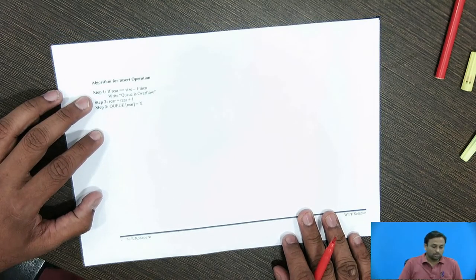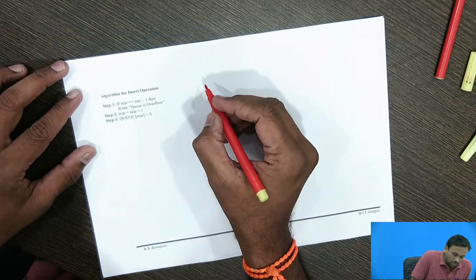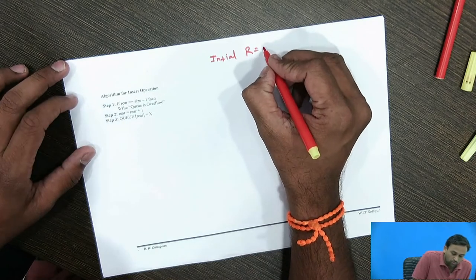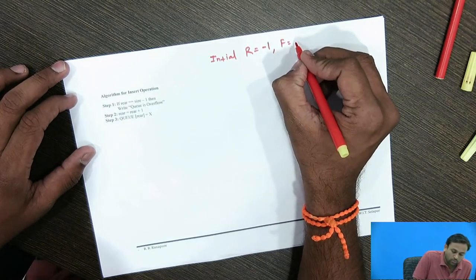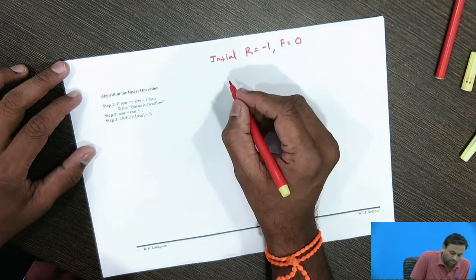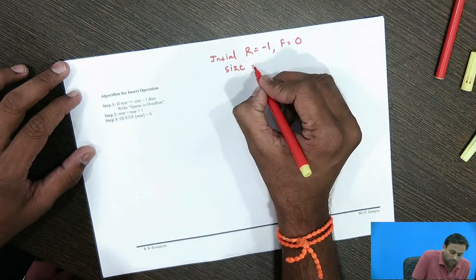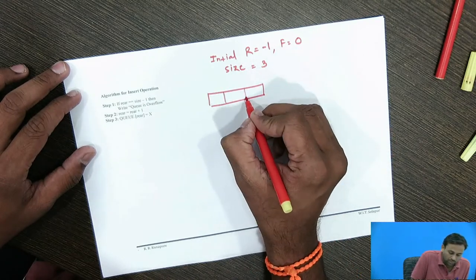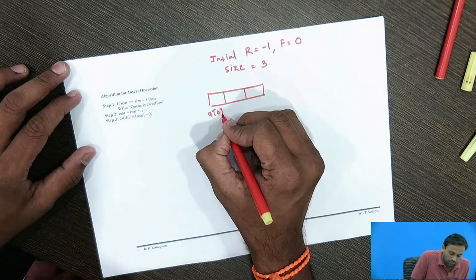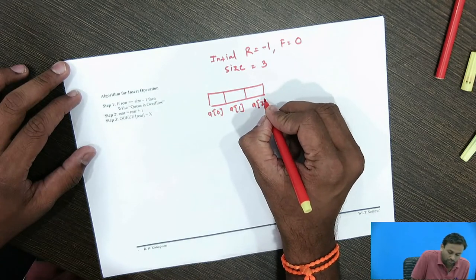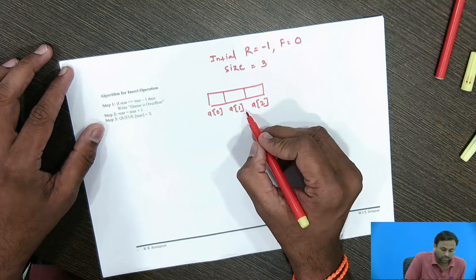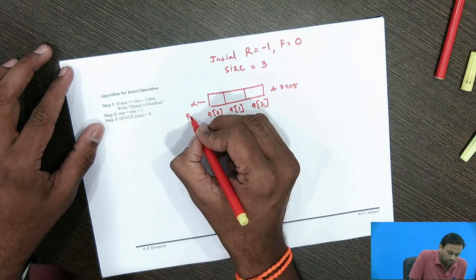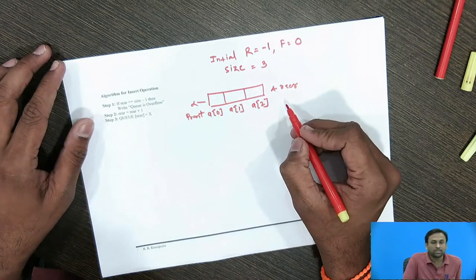For the insert operation algorithm, initially we take the value of rear equal to minus 1 and front equal to 0. If the size of the queue is 3, we have an array with positions a[0], a[1], and a[2] — an array of size 3. This is the rear end and this is the front end. While inserting elements, we insert every time from the rear end.